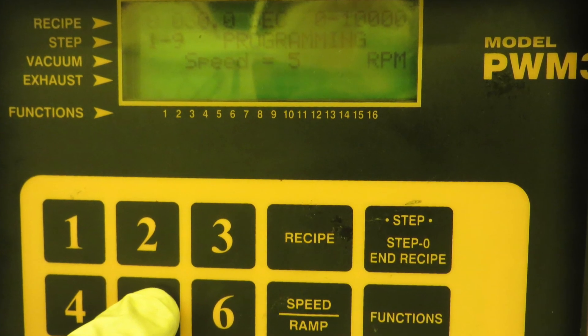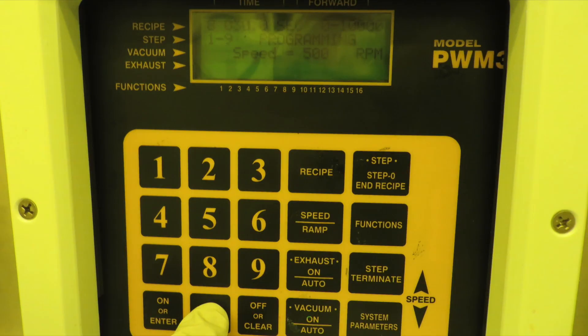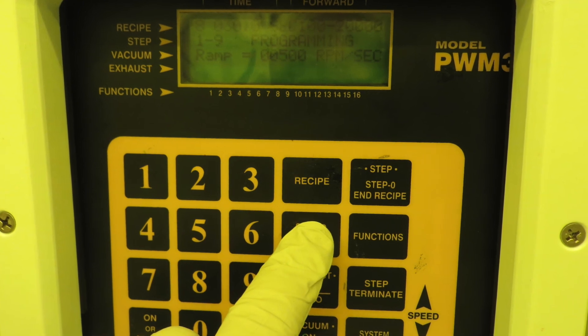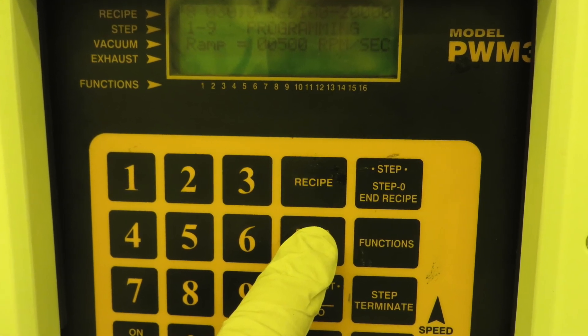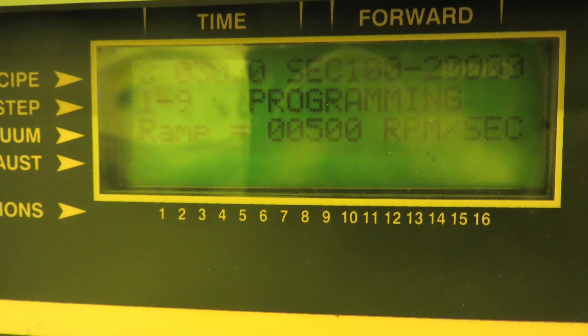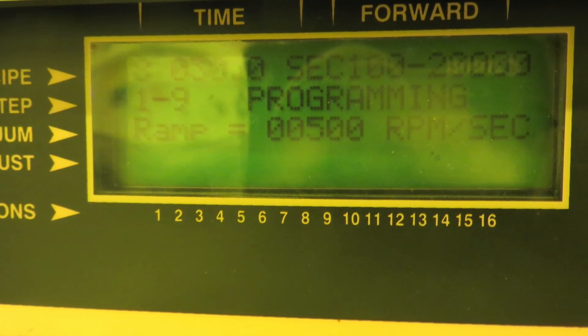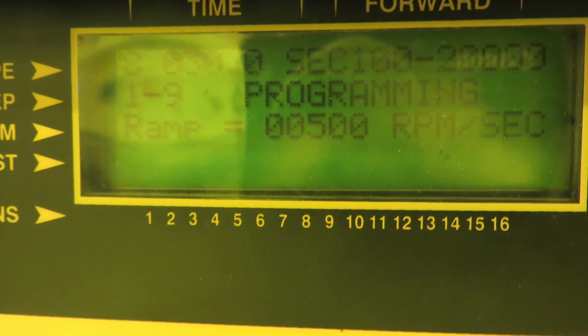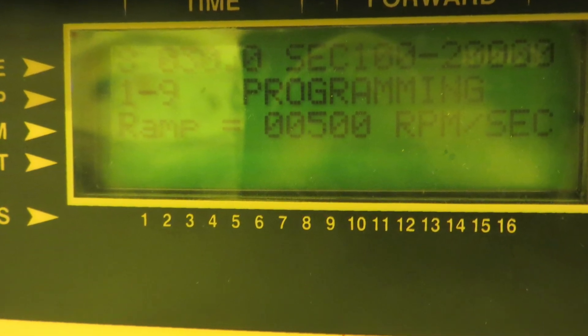So if you wanted to change this, you would put the numbers that you want, then hit enter. Otherwise, just move on to the next step, which is terminate. After you hit terminate, this is where you would enter how long in seconds that you want the spinner to hold steady at the RPM you just entered for step one. If you want to change this value, just punch in the new numbers and hit enter.